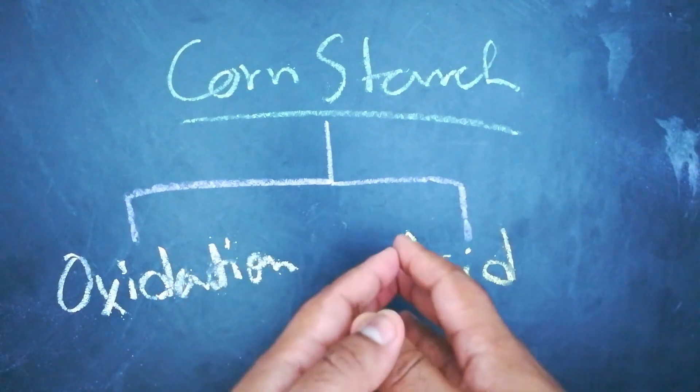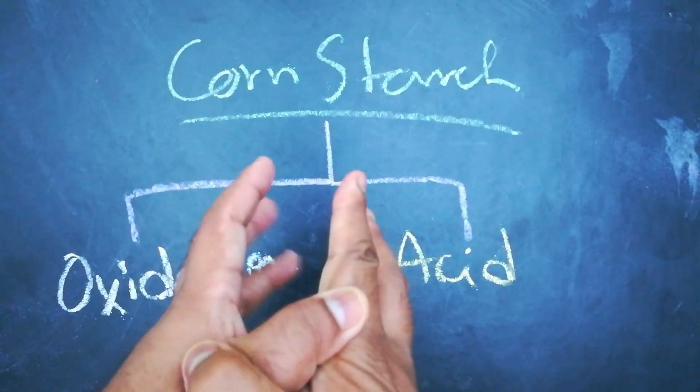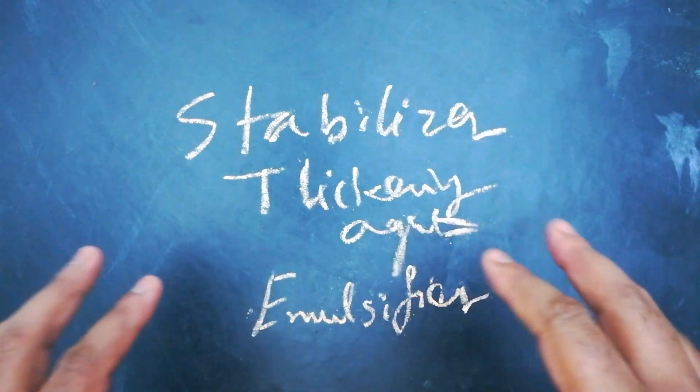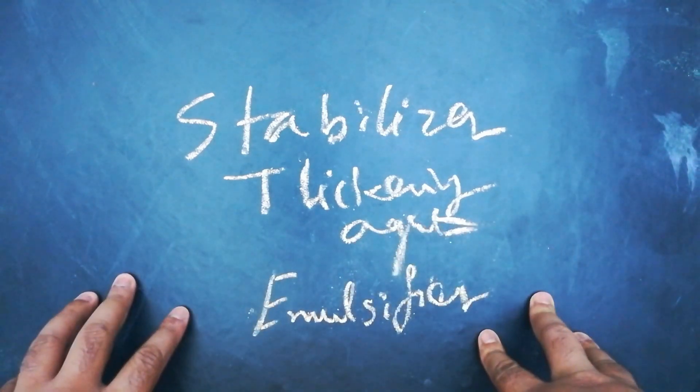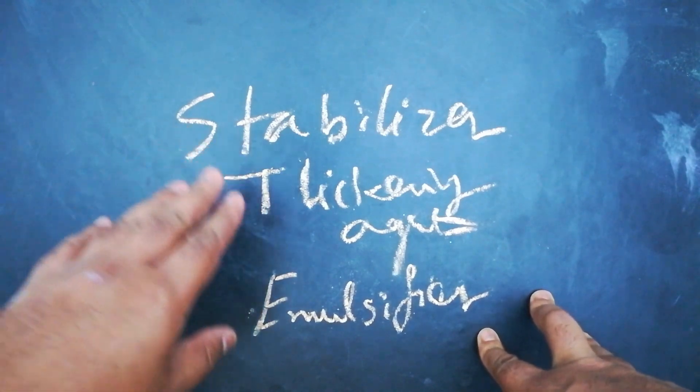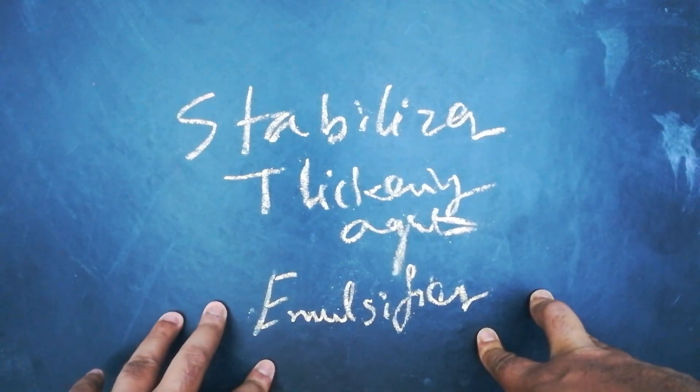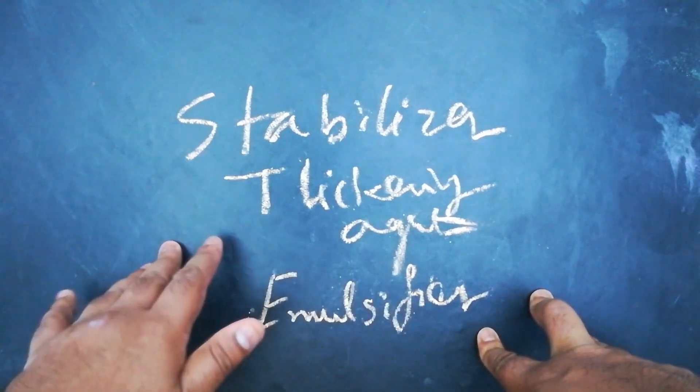The most common usage of modified cornstarch is as a stabilizing agent, thickening agent, and emulsifier. It's used in many things ranging from ice cream, yogurt, and also health supplements.